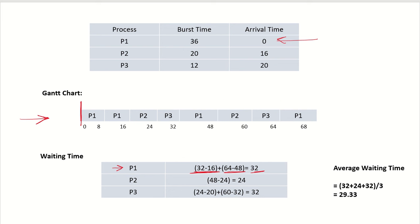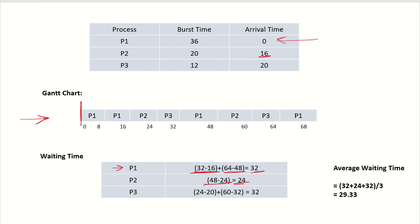For P2, it arrived at time 16 and was given the processor immediately at time 16, running from 16 to 24. Then it had to wait from 24 to 48, so its total wait time was 24 time units. For P3, it arrived at time 20 but was given the processor at 24, a wait of 4 time units, and then had to wait from 32 to 60, giving a total wait time of 32 time units.